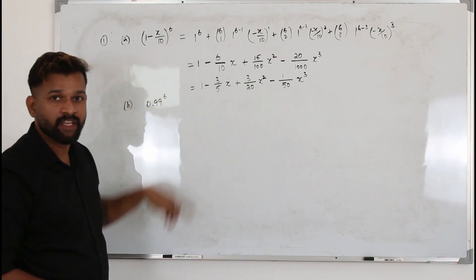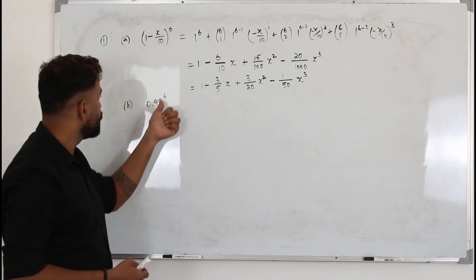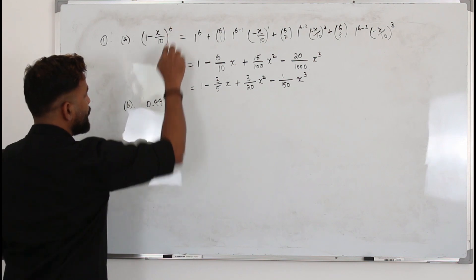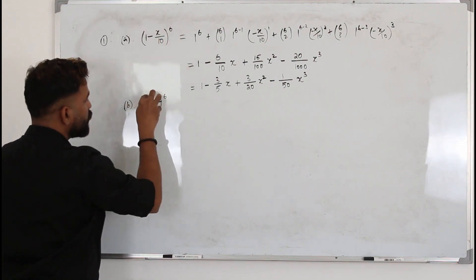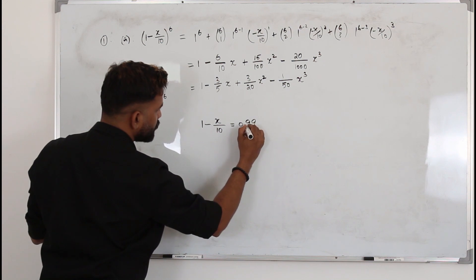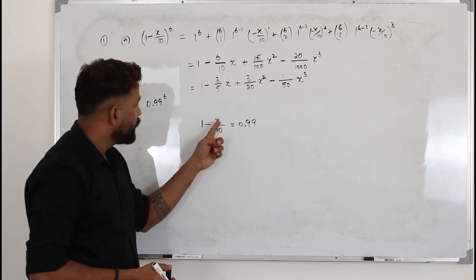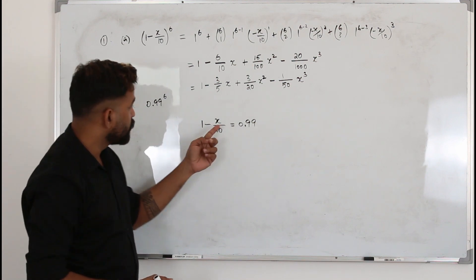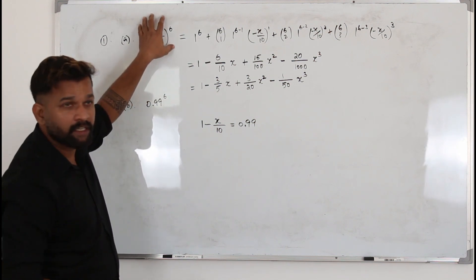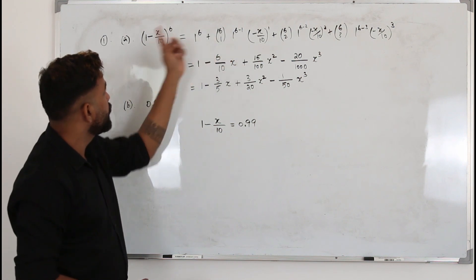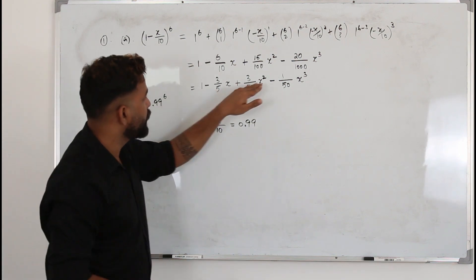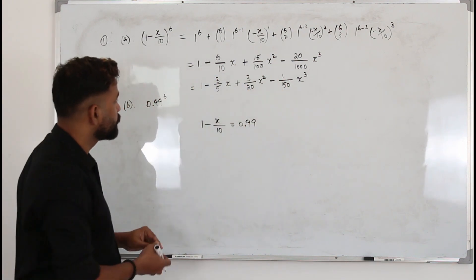For Part B, compare the two expressions — both have the same power of 6. We take the expression 1 − x/10 and set it equal to 0.99. We do this to find the value of x that gives 0.99 when substituted. Once we find x, we substitute it on both sides of the expansion: the left side becomes 0.99⁶, and the right side gives the approximation.